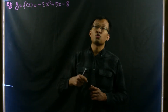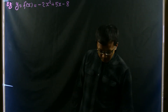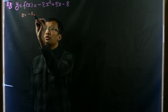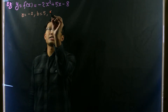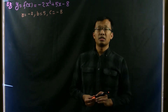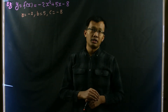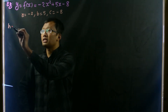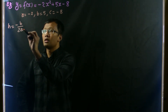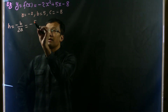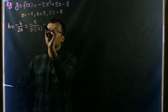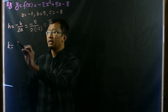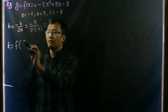Now let us analyze this quadratic function. Here a equals negative two, b is five, and c is negative eight. We will write this function in standard form. For that, h equals negative b over 2a, which is negative five over two times negative two, giving us five over four.